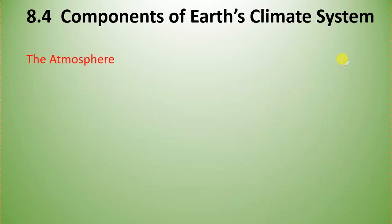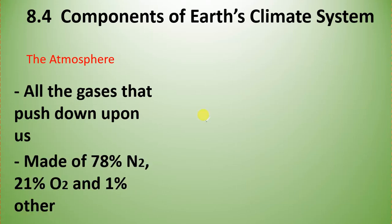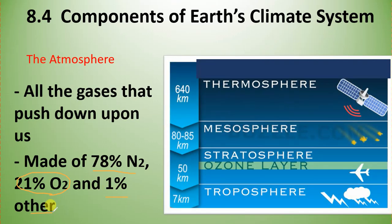The first one on our list is the atmosphere. All the gases that push down upon us make up the atmosphere. We've got 78% nitrogen, only 21% oxygen - people always think it's maybe the reverse - and 1% other stuff. Water vapor varies depending on where you are.